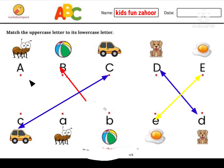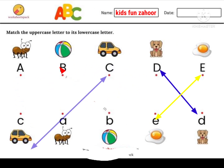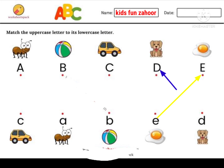A is going to back. B is going to back. C is going to back. D is going to back.